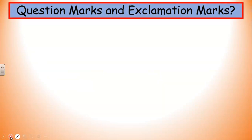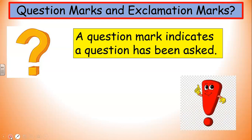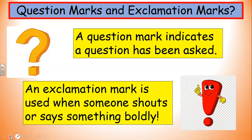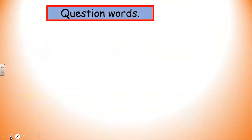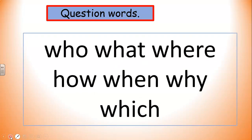We've also had to have a look at question marks and exclamation marks. A question mark indicates that a question has been asked, so we need to put a question mark at the end of a sentence if it's a question. And an exclamation mark is used when someone shouts or says something quite boldly — like 'sit up straight', or 'please be quiet', or 'be careful', 'don't cross the road' — then we put an exclamation mark to say that this is quite a strong statement. Let's also look at question words — what sort of words would we see at the beginning of a question sentence?